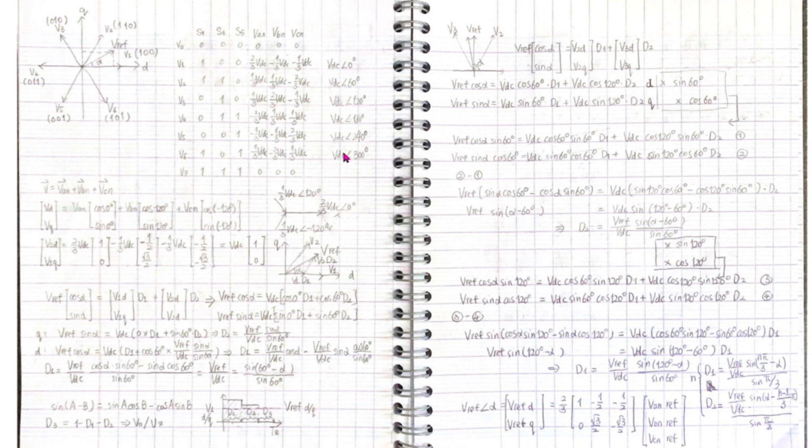When synthesizing a space vector with a reference vector, the feasible space in the DQ plane is a hexagon, as shown in the figure. Then the active space vectors divide the hexagon into six triangular sectors.